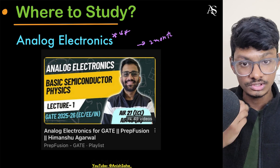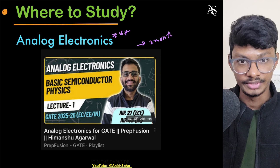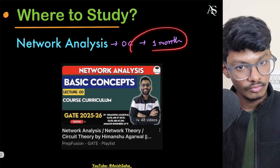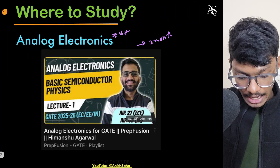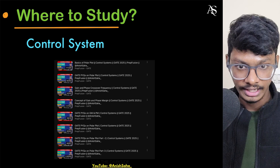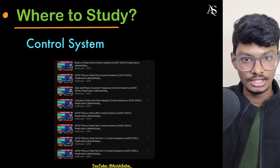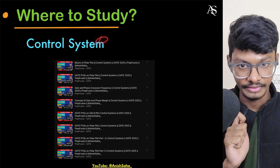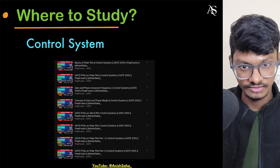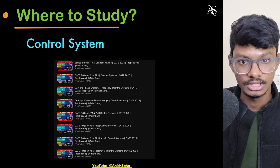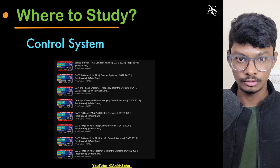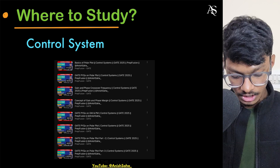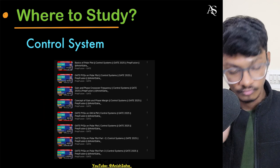For analog electronics, MOSFETs are important, then op-amps — negative feedback, positive feedback — then CMOS and MOS. This will take you two months for analog electronics and one month for network analysis. Control systems has two-star priority because they may ask questions about gain margin, phase margin, and Bode plots — so if you want to completely prepare for interviews, you have to study these as well.